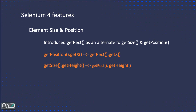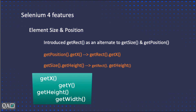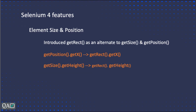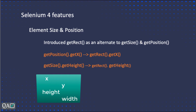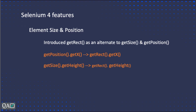The getRect method basically returns a Rectangle class object. Using that object, we can get the x and y coordinates of a particular element, and we can also get the height and width of that element. This object exposes four different methods — getX, getY, getHeight, getWidth — and also four different properties: x, y, height, and width. We'll see both ways to get the position and size of a browser element.